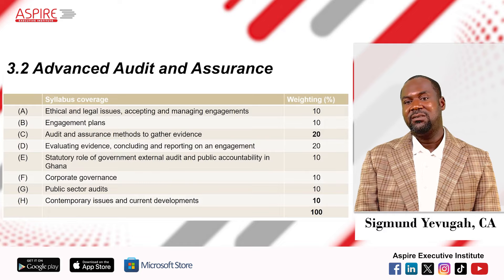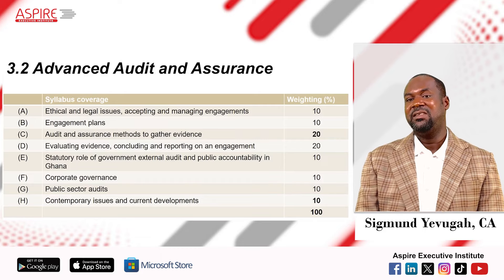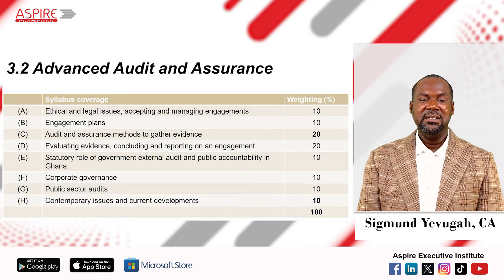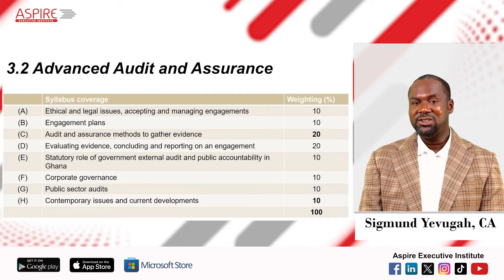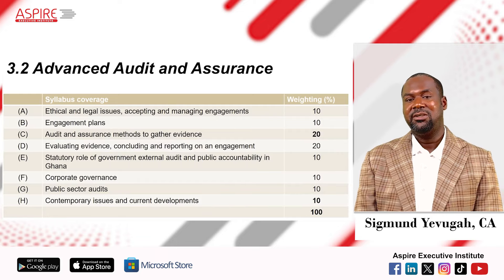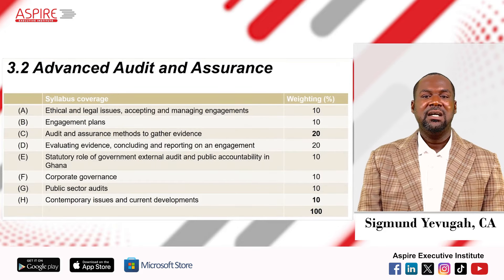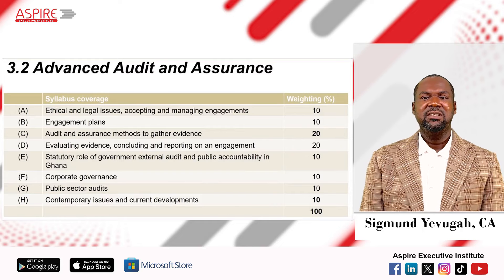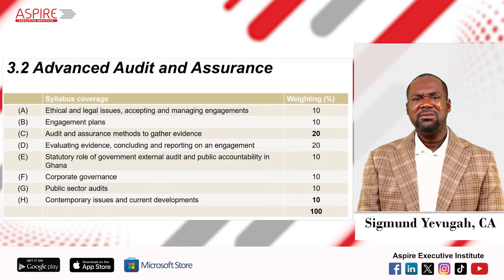A major issue now is corporate governance. In the old syllabus, this was an issue that had not been majorly emphasized — it was part of the ethics and legal issues under the 10-mark area — but has now been elevated and set aside as a separate core issue worth 10 marks. So corporate governance is now a separate learning objective in the audit and assurance syllabus. For contemporary issues and current developments, current issues are still retained in this syllabus.